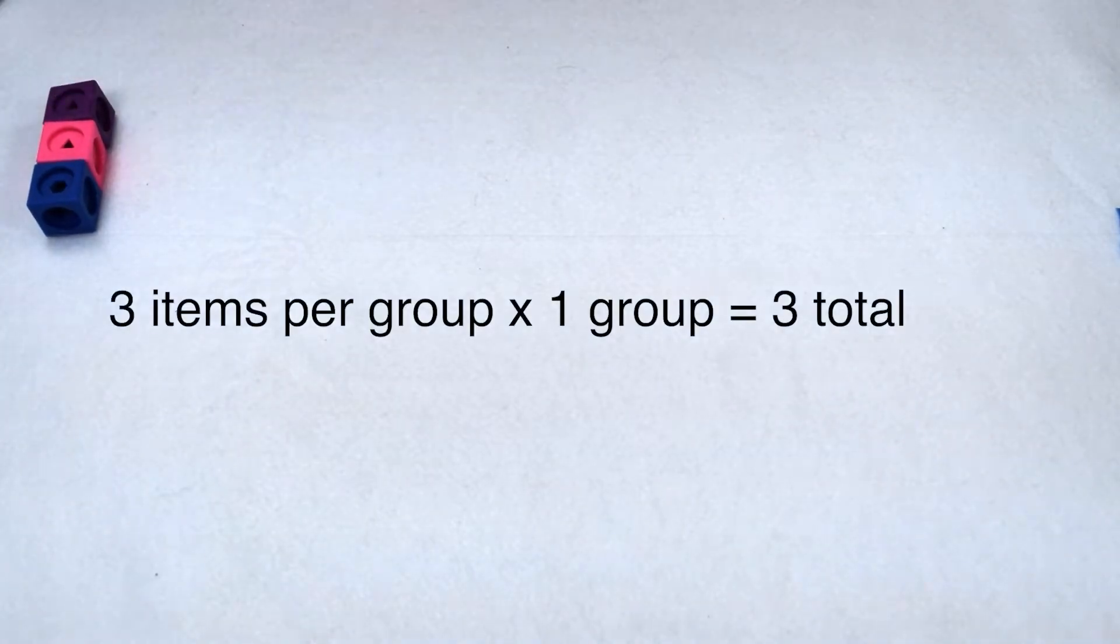The multiples of a whole number are the product of that number and another whole number. Let's find our multiples of three by using our times tables. Let's start with three times one. Three items per group times one group gives me a total of three, so our first multiple of three is three.